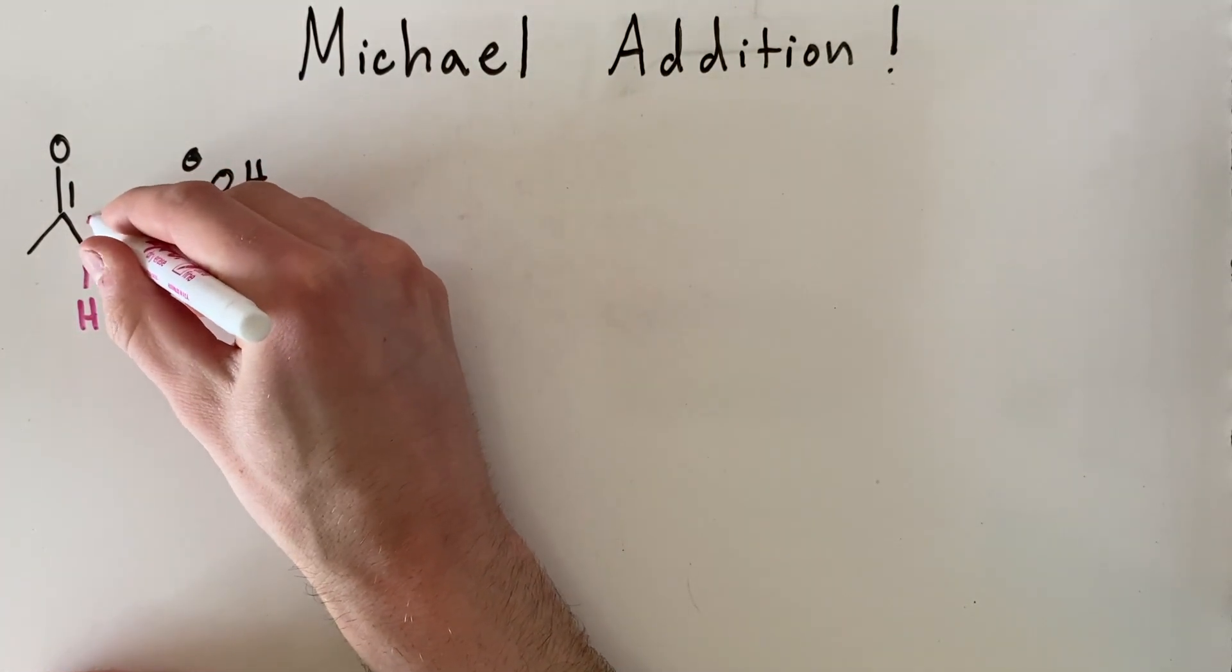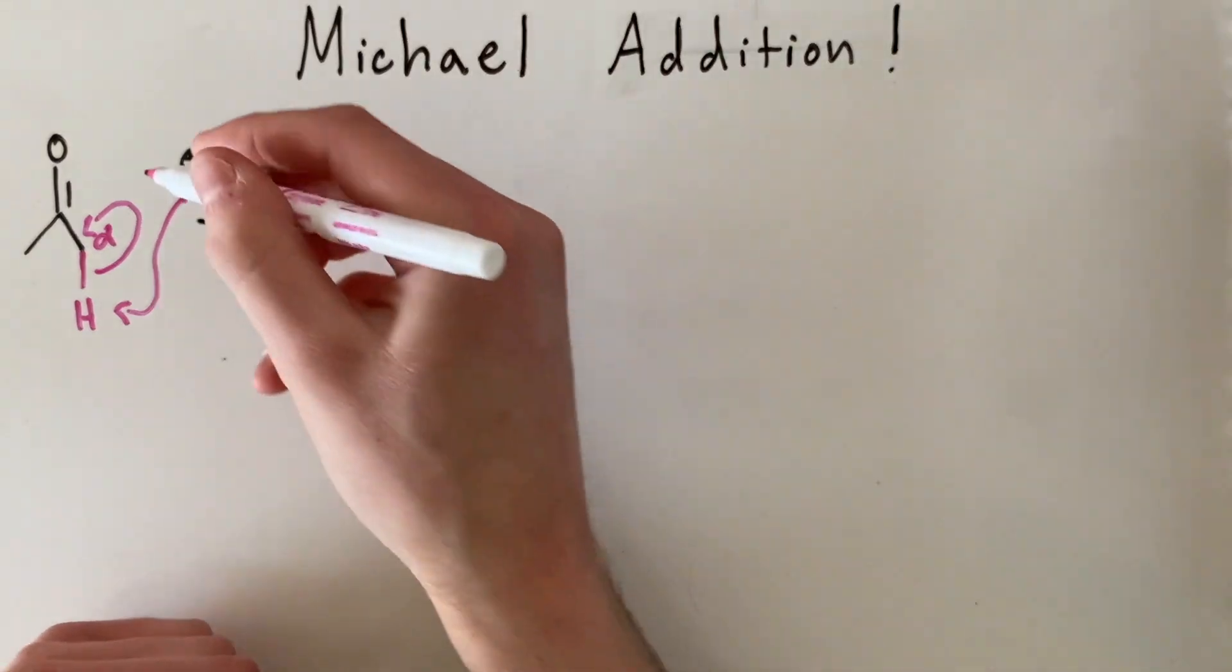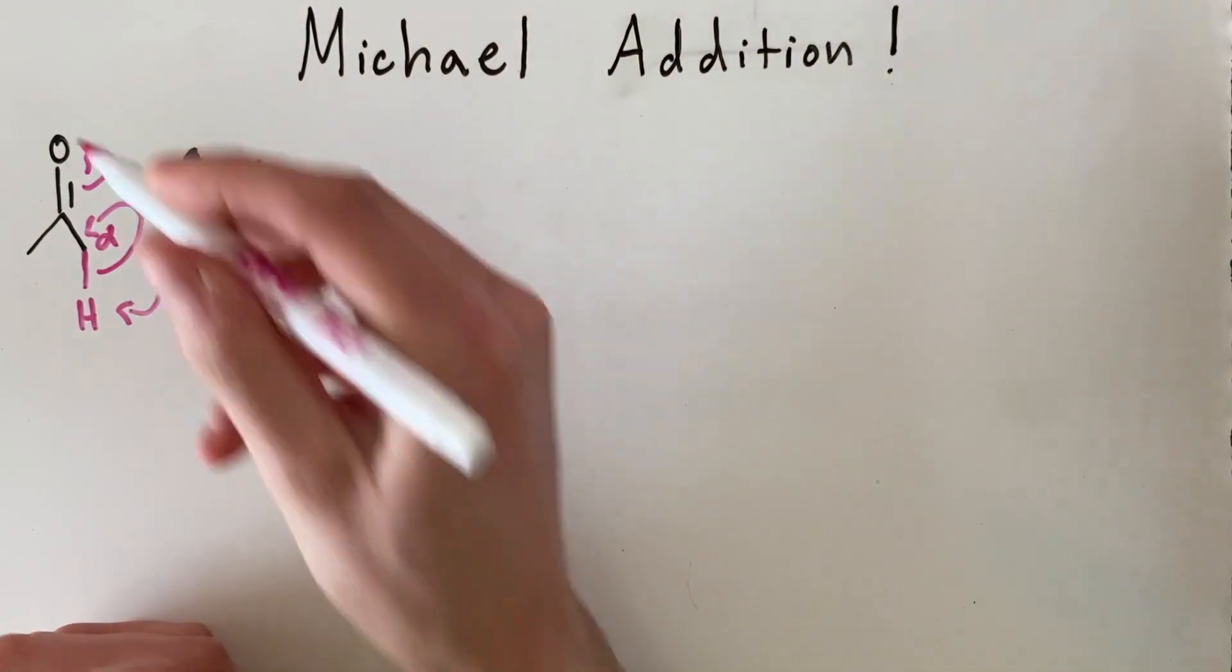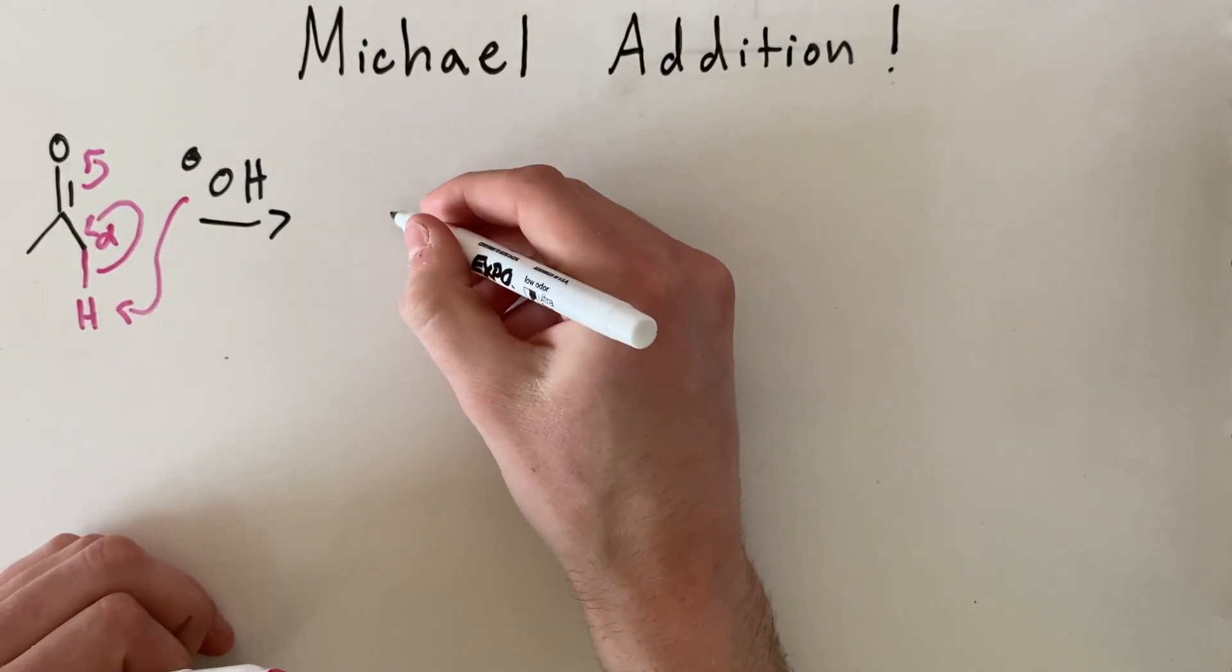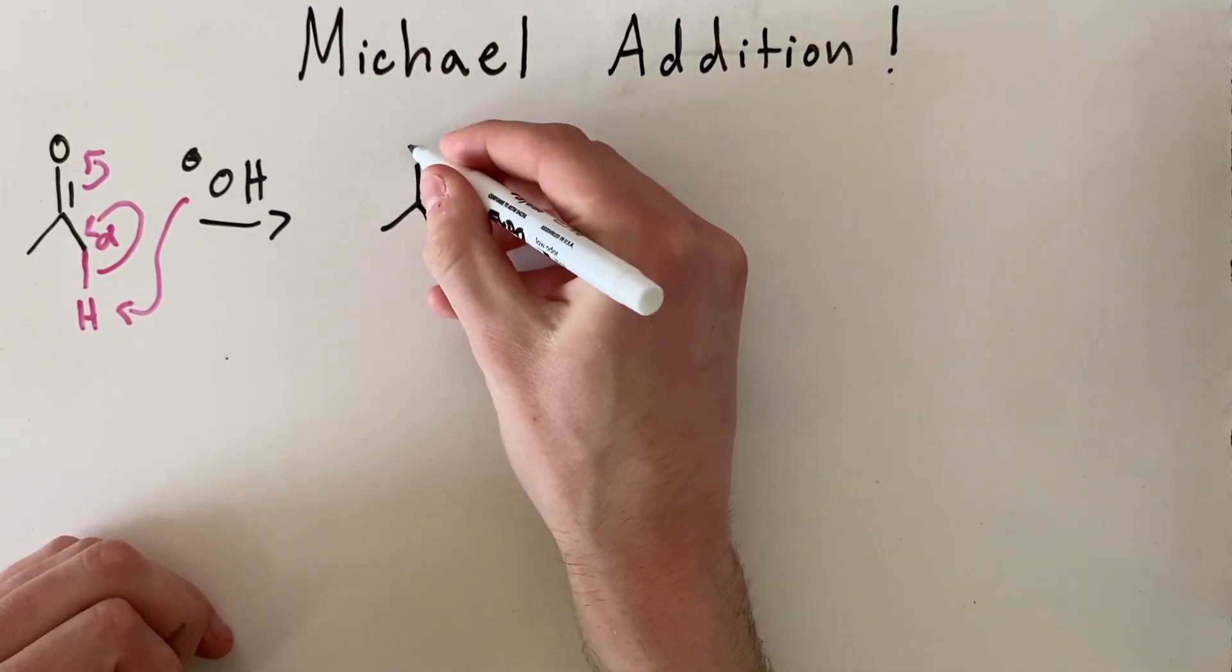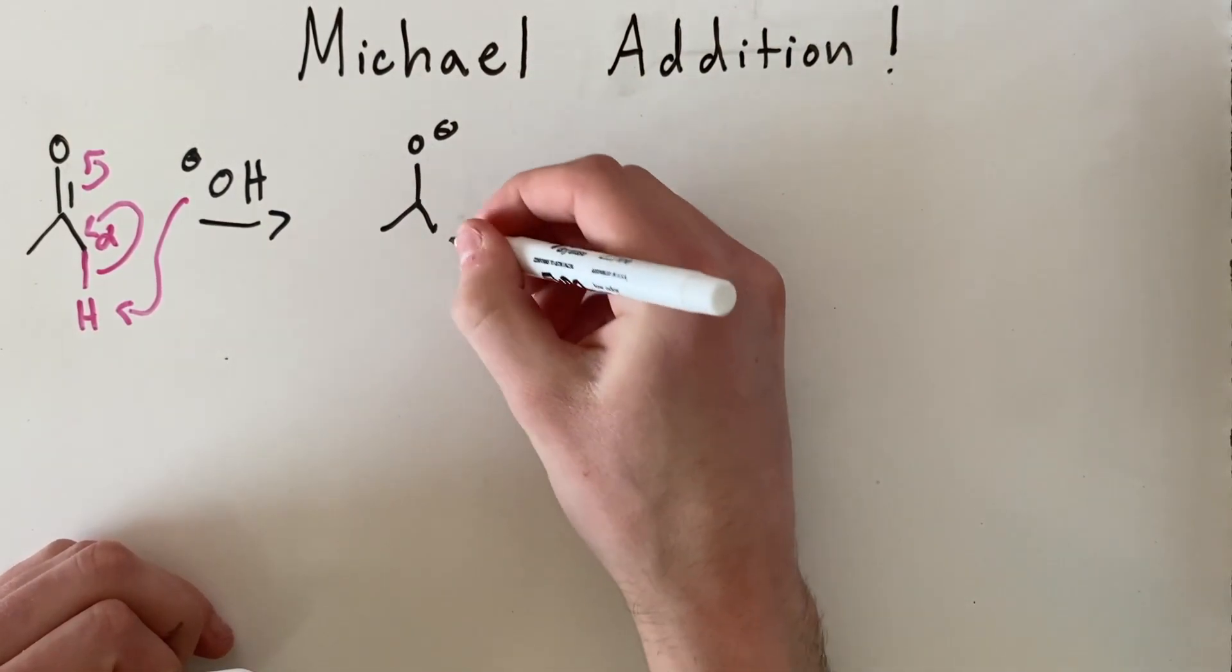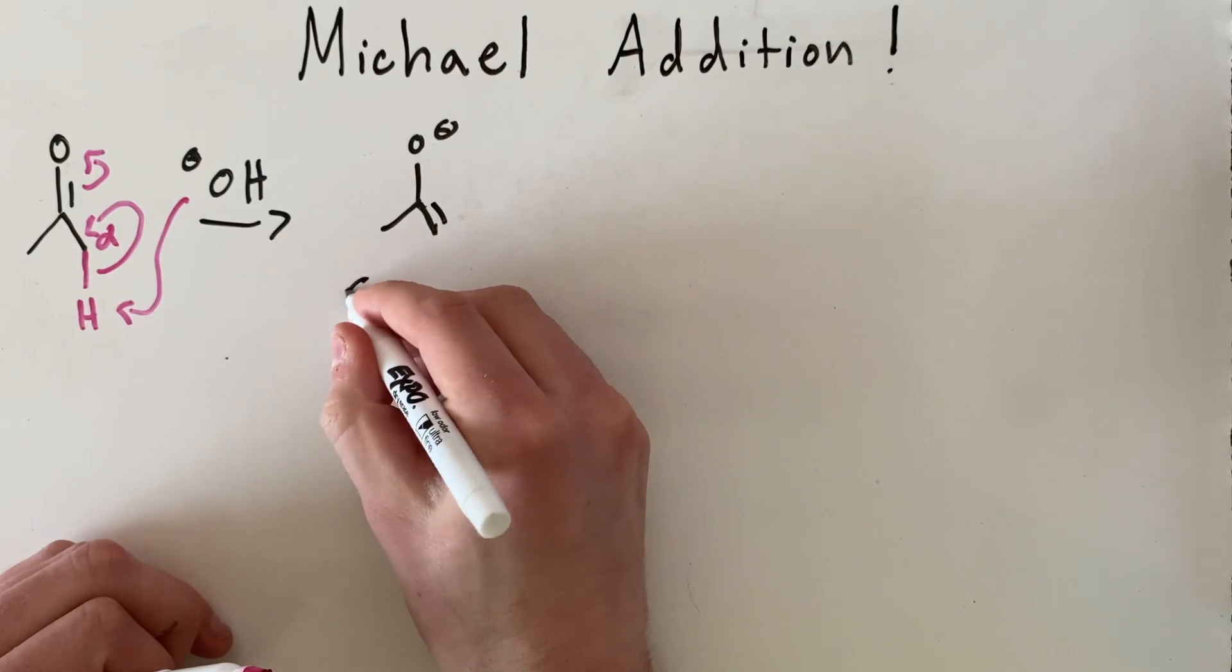These electrons will move to form an alkene bond and these pi electrons will move up to the oxygen. This will yield something you've probably seen before. It's an enolate ion.